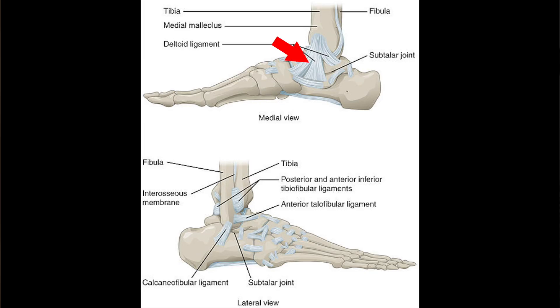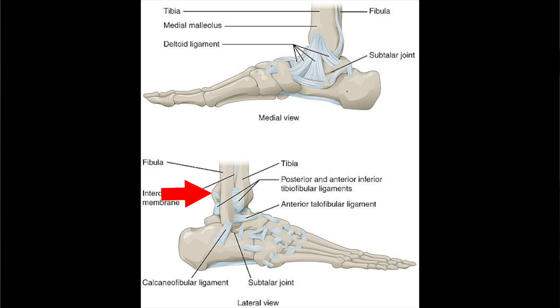The injuries usually associated with this mechanism include either an injury to the deltoid ligament on the medial aspect of the ankle or a fracture of the medial malleolus. This is then followed by injuries to the ligament structures on the anterolateral aspect of the ankle, including possibly the syndesmosis — the ligament connection between the tibia and the fibula — and then followed by a fibular fracture. In some cases, there is also a posterior malleolus fracture as well.